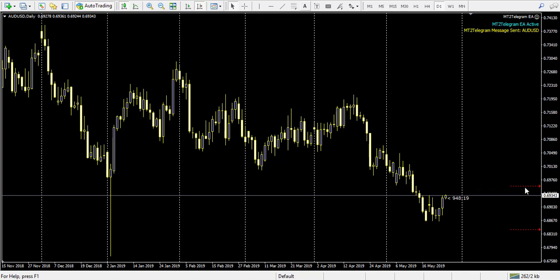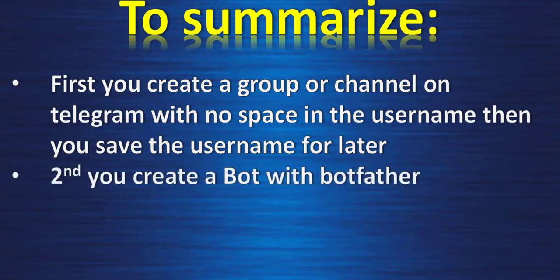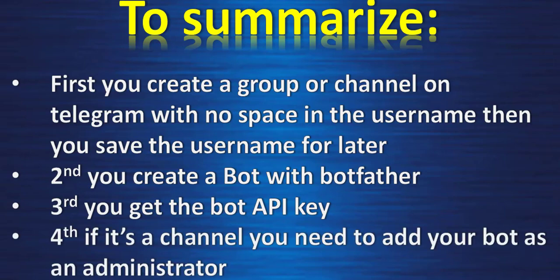To summarize: first, create a group or channel on Telegram with no space in the username, then save the username for later. Second, create a bot with BotFather. Third, get the bot API key. Fourth, if it's a channel, add your bot as an administrator — get the bot's username and add it directly as an administrator of your channel or group.